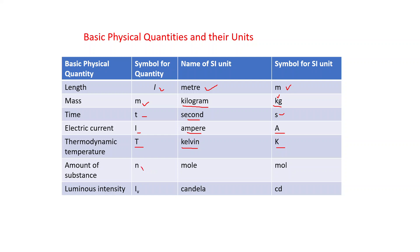Amount of substance, represented as N, and its SI unit is M-O-L-E. When you write in symbolic form, that is M-O-L. Luminous intensity IV, its unit is candela, that is cd.